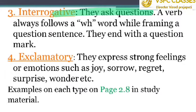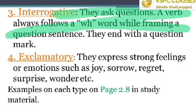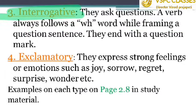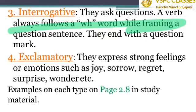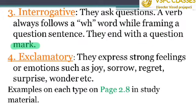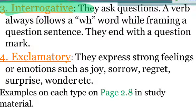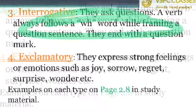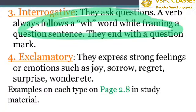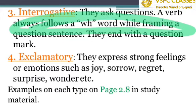Next is interrogative. Interrogative sentences ask questions. A verb is always followed by a WH word while framing a question sentence, and they end with a question mark. All questions are basically interrogative sentences. For example, 'May I come in?', 'Where were you?', and 'What is your name?' all fall under interrogative sentences.